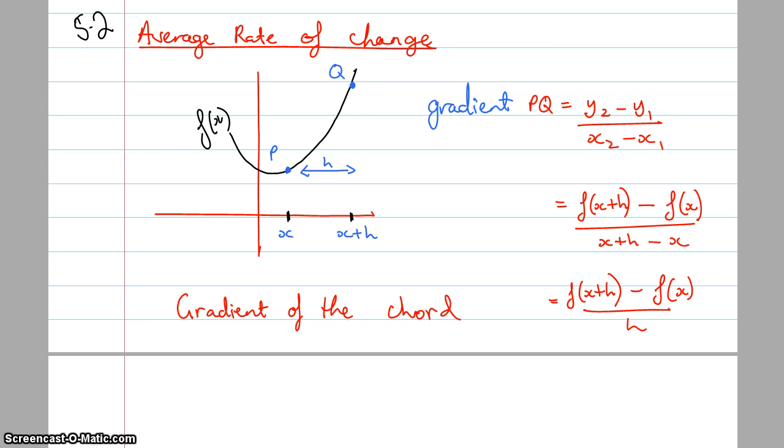So imagine that I've got this graph here, we call it f of x, and I've got the point P and the point Q. And I know that the x value is x at the point P, and then it's got some distance between the next point, and we'll call that distance h. So that means the other x value is going to be x plus h, and then the point Q is that far away from point P in the x direction.